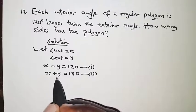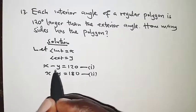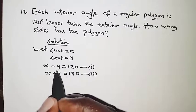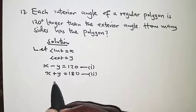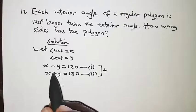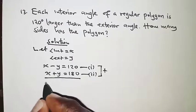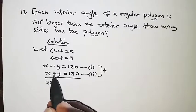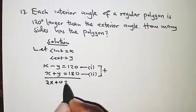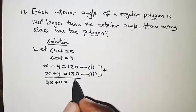I'm going to apply the elimination method. I want to eliminate y, and since we have a negative y and a positive y, we eliminate by adding the two equations. Adding equation 1 to equation 2: x plus x gives 2x, negative y plus positive y gives 0, and 120 plus 180 gives 300.